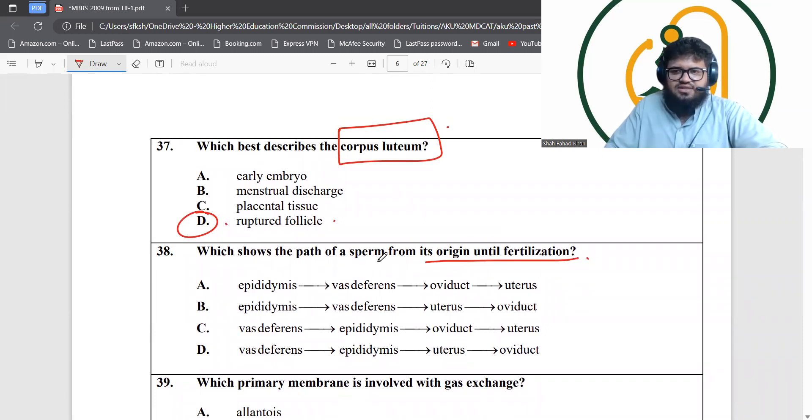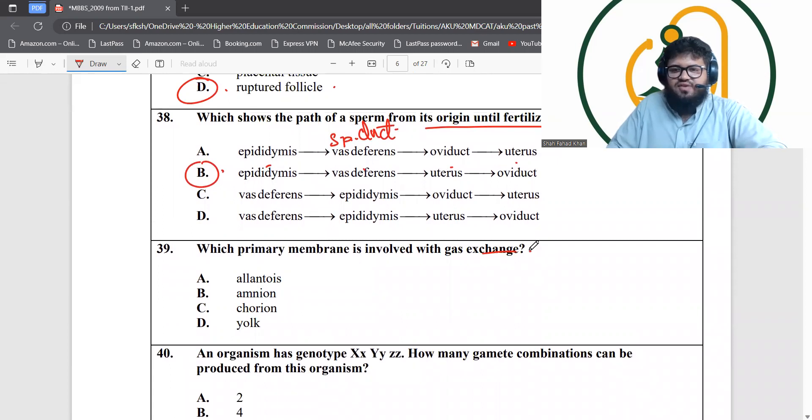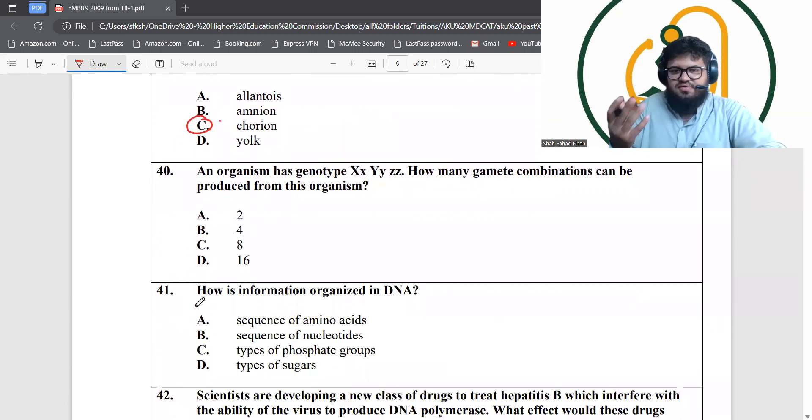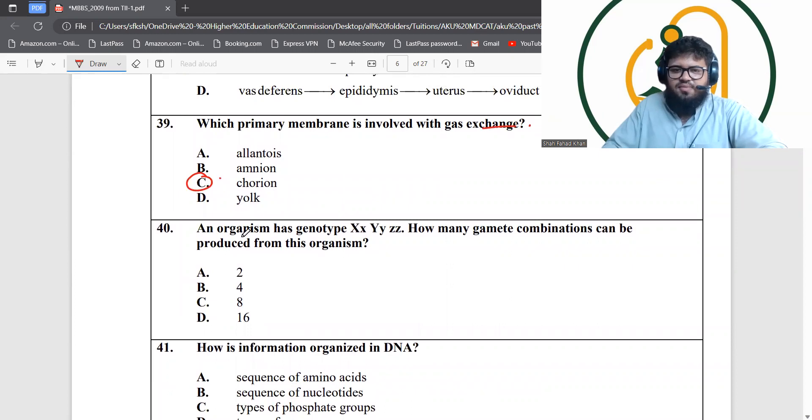Which shows the pathway of the sperm from origin until fertilization? Origin is from epididymis. Epididymis comes first, then vas deferens is the sperm duct that transfers it from the epididymis all the way to the urethra. Ejaculation through urethra then uterus. Option B is the best answer. Question 39, which primary membrane is involved in gas exchange? This is just simple factual knowledge.